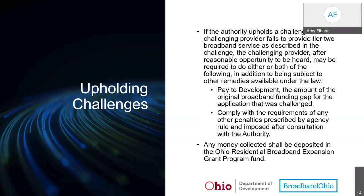If the authority upholds a challenge and the challenging provider fails to provide Tier 2 broadband service as described in the challenge, the challenging provider, after reasonable opportunity to be heard, may be required to pay to Development the amount of the original broadband funding gap for the application that was challenged, and/or comply with the requirements of any other penalty prescribed by agency rule and imposed after consultation with the authority. Any monies collected will be deposited into the Ohio Residential Broadband Expansion Grant Program fund.